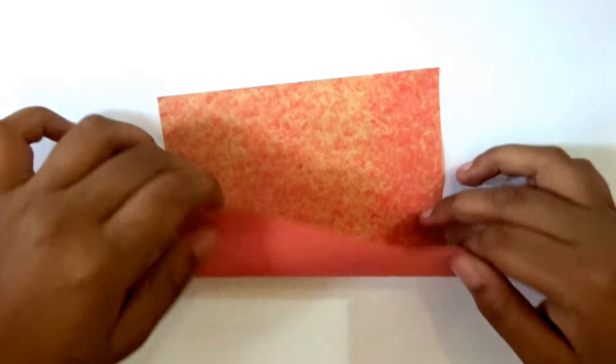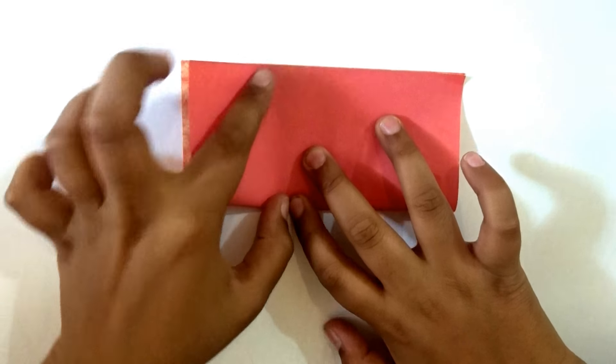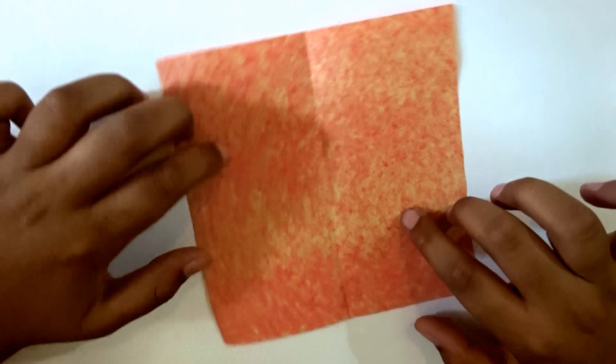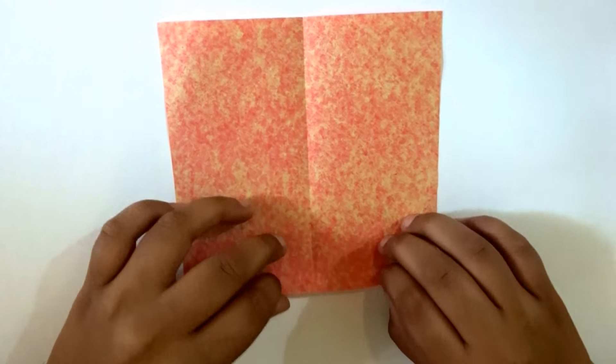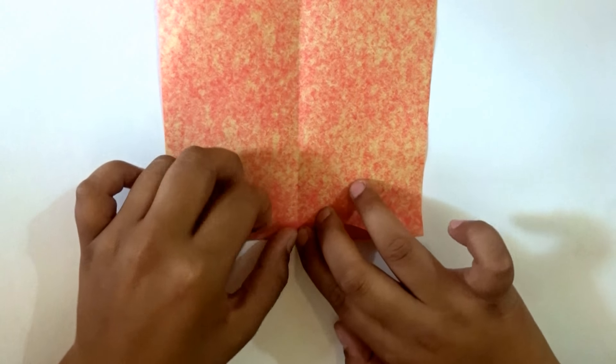First, we are going to be folding our paper horizontally. Now we are going to be opening it and turning it like this. Now we are going to be folding the paper like this.